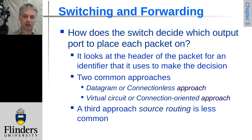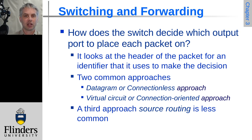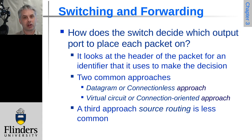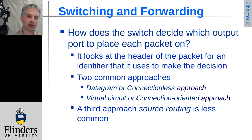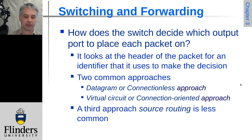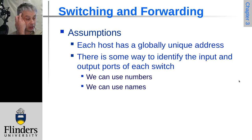Two very common approaches are a datagram or connectionless approach, which uses the destination address field from the ethernet frame, or a virtual circuit or connection-oriented approach where you might have some kind of tag on a whole flow of traffic regardless of who it's to or from. A third approach, which is much less common, is source routing, where the source of the packet is the thing used for the decision-making process.